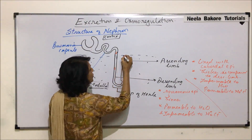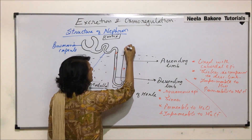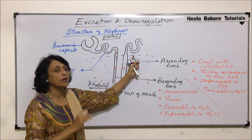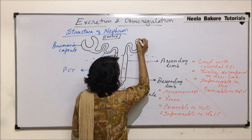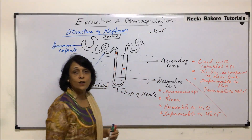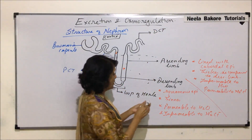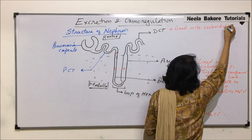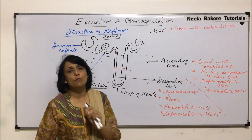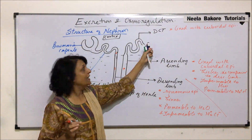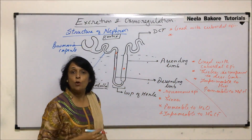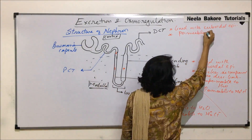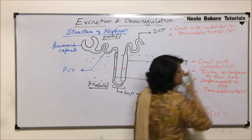The loop of Henley opens back into the cortex region, where it again forms a coiled part. As this is the later part of the tube, we call it the distal part and it is convoluted, so this part is known as DCT — distal convoluted tubule. The distal convoluted tubule is also lined with cuboidal epithelium and has few microvilli. DCT is permeable to both sodium and chloride ions, as well as sodium and potassium ions.